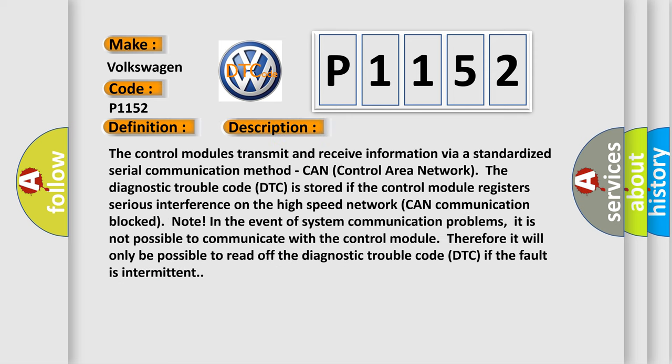The control modules transmit and receive information via a standardized serial communication method: CAN (control area network). The diagnostic trouble code DTC is stored if the control module registers serious interference on the high-speed network CAN communication block.